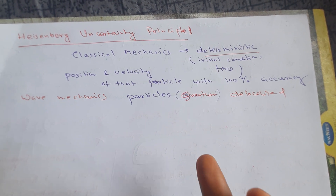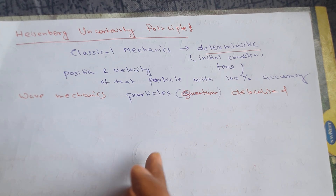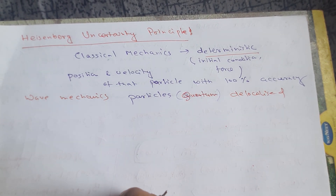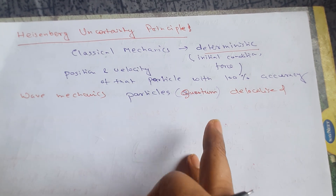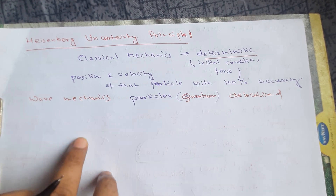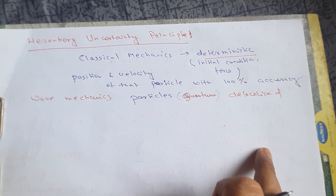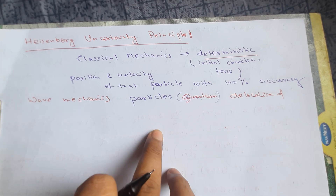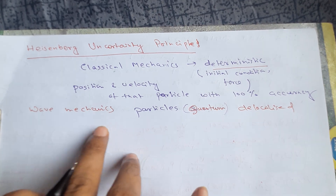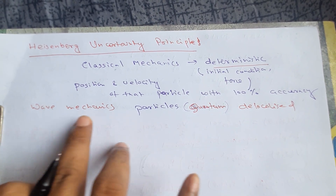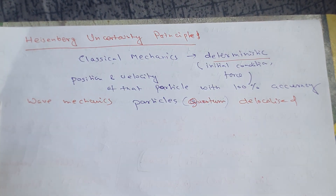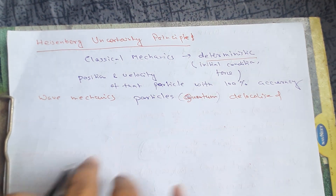We don't actually know, without disturbing the particles, where they are. When you observe a particle, you know the position at that instant, but then you disturb the state of the particle. Otherwise, you don't know which slit the particle is going through in the double slit experiment. That means it's not localized like classical particles. So according to wave mechanics or quantum mechanics, particles are not localized.